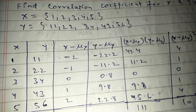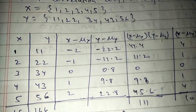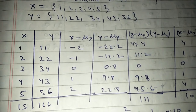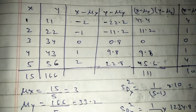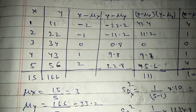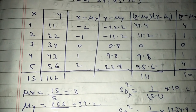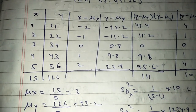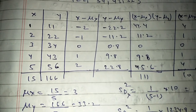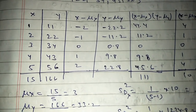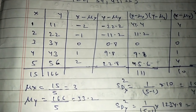First of all, calculate the mean of x and y. The sum of 1, 2, 3, 4, 5 is 15. The sum of 11, 22, 34, 43, and 56 is 166. The mean is denoted by μ. The number of elements is 5, so we divide the total by 5. Mean of x is 15 divided by 5 equals 3. Mean of y is 166 divided by 5 equals 33.2.